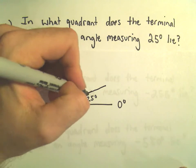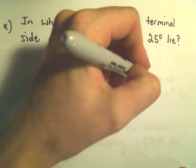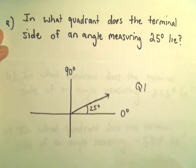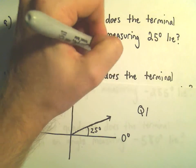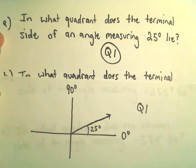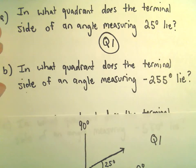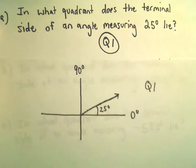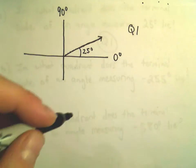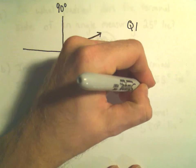This is the terminal side. So we would simply say it's in quadrant 1. If it's got 25 degrees, its terminal side will be in quadrant 1. Negative 255 degrees is the next one. Where is negative 255 degrees?